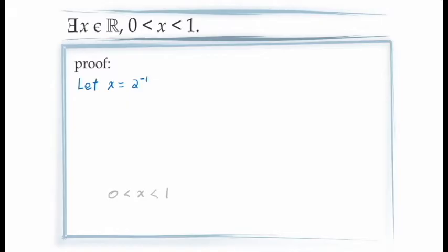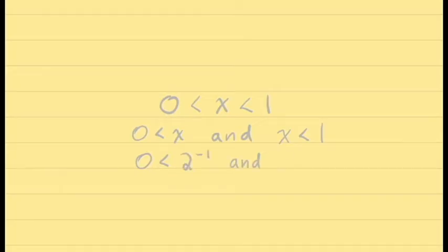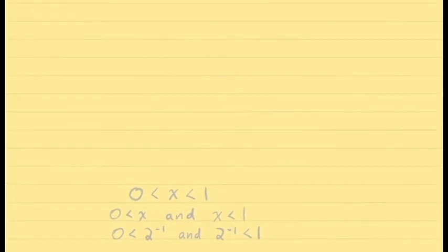Let's get out a scrap piece of paper. The double inequality 0 < x < 1 is really just a shorthand for two inequalities: 0 < x and x < 1. So if we're going to demonstrate this for our example, the inverse of 2, we need to show two things: that 2⁻¹ > 0, and that 2⁻¹ < 1. We've already proven in general that for every real number x, if x is positive, then the inverse of x is positive.